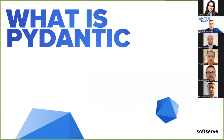Pydantic is a Python library for data validation and settings management based on Python type hints. It allows you to define how data should look in pure canonical Python and helps you validate it with Pydantic models. It is fast, extensible, and plays really nicely with your linters, IDE platforms, and even your brain — because it reduces hard thinking on things related to validation and serialization.